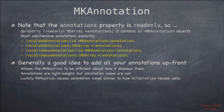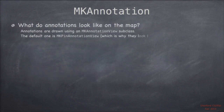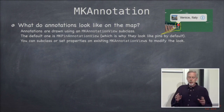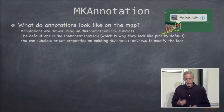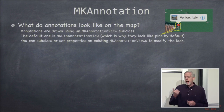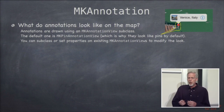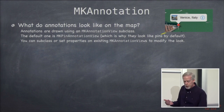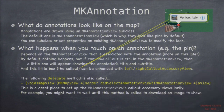If you have hundreds of annotations but only five are on screen, you're only going to create five of those MK annotation views. As you move around in the world and they go off screen, they'll get reused for new ones. Letting the map view know all the annotations up front is nice to help it manage performance, though sometimes you don't know all the annotations up front — it might be happening in real time.